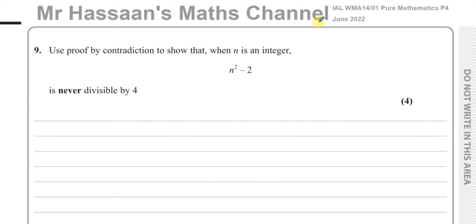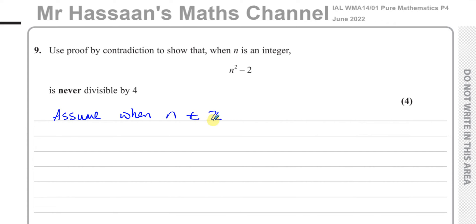The question says: use proof by contradiction to show that when n is an integer, n squared minus 2 is never divisible by 4. So what we need to do is first write down a statement that negates this — the opposite of the statement. So we assume the opposite: when n is an element of the integers, n squared minus 2 is sometimes divisible by 4.